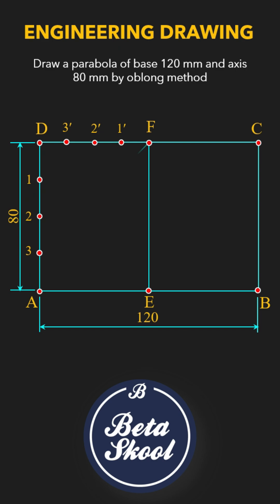Now join points 1, 2, and 3 with point F by straight lines. Next, draw lines parallel to the axis EF through points 1', 2', and 3'. Let these lines meet with the lines previously drawn at points P1, P2, and P3 respectively.